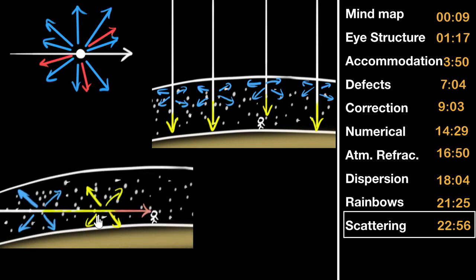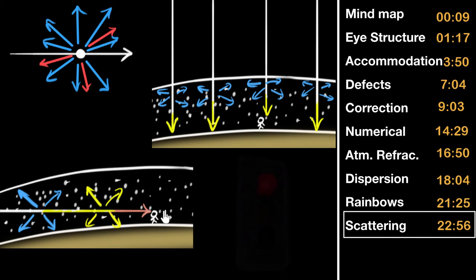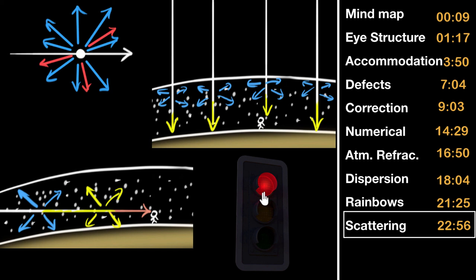The same happens during sunrise and sunset. Light passes through a much larger region of atmosphere, so almost all the blue gets scattered out — and even green and yellow get scattered because there are far more atmospheric particles along that longer path. The only light that survives is red or orange, which is why the sun looks reddish or orange at sunrise and sunset. Since red light gets scattered the least, it travels the longest distances — which is why danger signals are denoted by red.